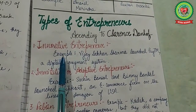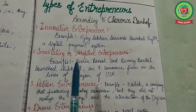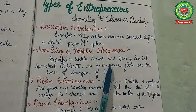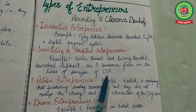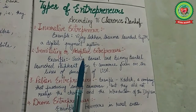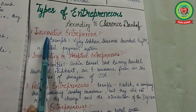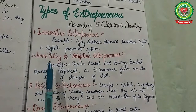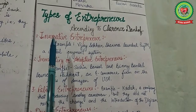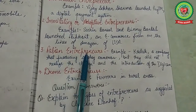The second type is the imitating entrepreneur. For example, Sachin Bansal and Binny Bansal launched Flipkart, an e-commerce firm modeled on the lines of Amazon USA. These entrepreneurs adopt or imitate successful innovations created by innovative entrepreneurs — they follow in the footsteps of innovative entrepreneurs.